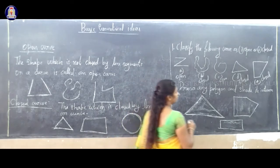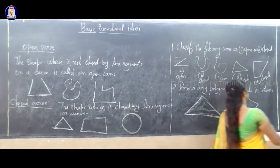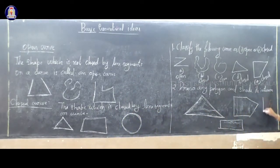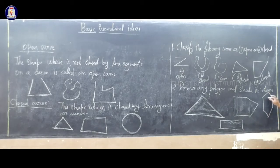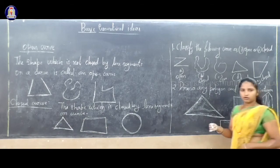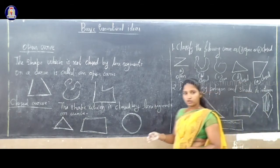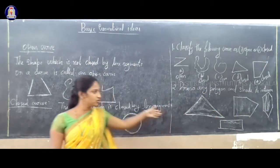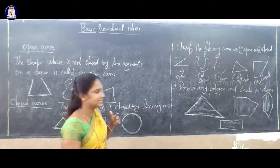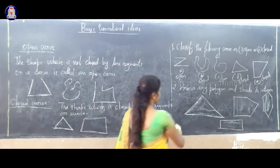If you want, you can draw a hexagon — hexagon is the figure having six sides: one, two, three, four, five, six. Hexagon has six sides. Seven sides is a heptagon, eight is an octagon, nine is a nonagon, ten is a decagon. These are all examples of polygons.